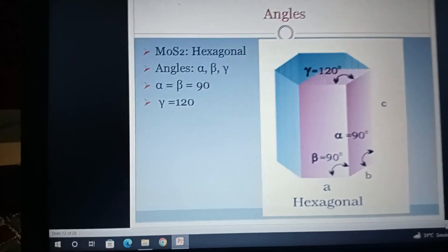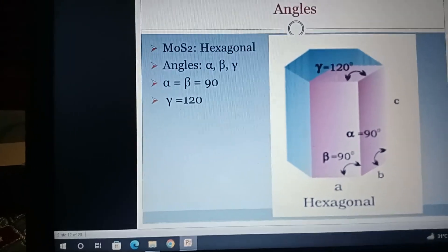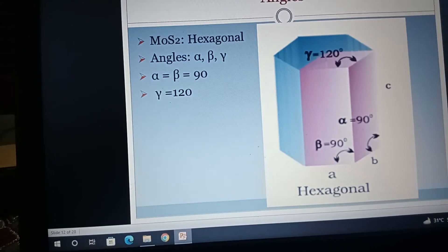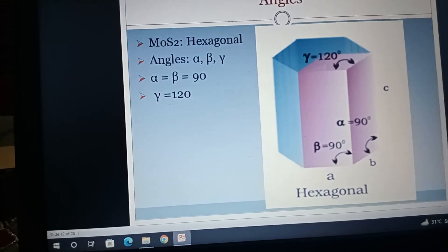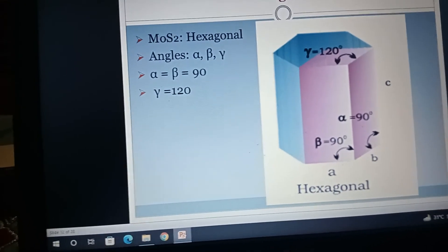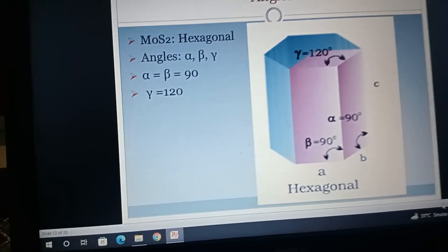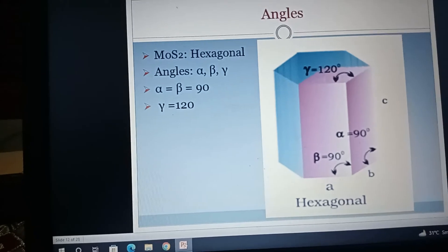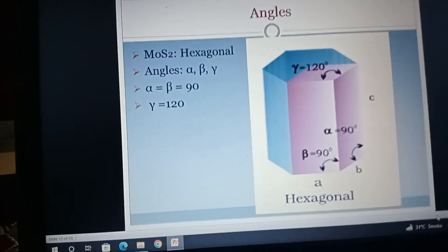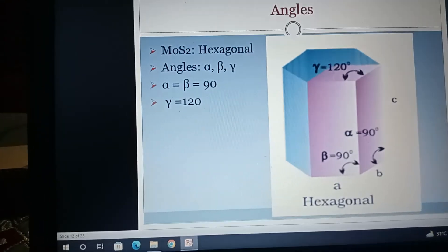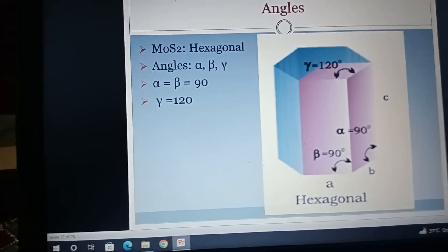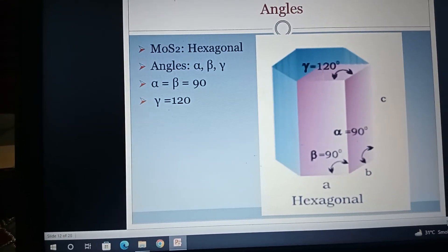Angles: since MoS2 is a hexagonal structure, so there are three main angles: alpha, beta, and gamma. Alpha and beta will probably be 90 degrees angle, and gamma will be 120 degrees angle. In any cubic structure, three angles are 90 degrees.